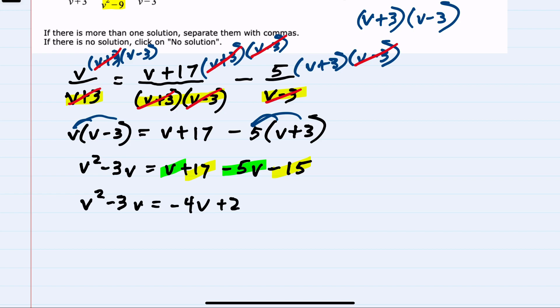From here, I know I'm going to end up with a quadratic because I have this V squared term, so I'm going to want to set this equal to zero. I can do so by moving all of the terms on the right-hand side over to the left. Adding four V to both sides and subtracting two from both sides cancels everything on the right, leaving me zero. On the left, I have the V squared. Combining like terms, minus three V plus four V is plus one V, and then bringing down that minus two.